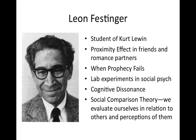Leon Festinger, a student of Kurt Lewin who studied leadership styles, looked at proximity effects in friends and romance partners. When we look at the four factors of attraction — competence, physical attractiveness, and other factors — proximity comes from Festinger. He looked at how believers deal with it when a prophecy fails, then created lab experiments in social psych and developed the theory of cognitive dissonance: how we adapt when ideas in our heads conflict, or when our own behaviors conflict with our self-views. He also created social comparison theory — the idea that we evaluate ourselves in relation to others.